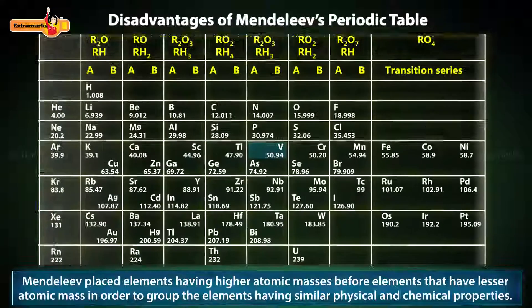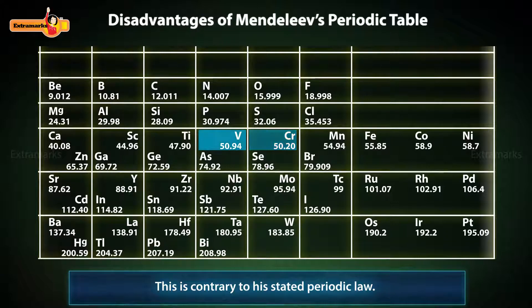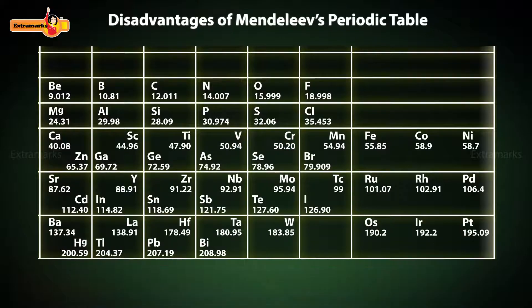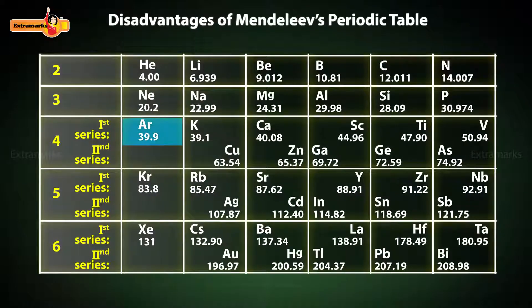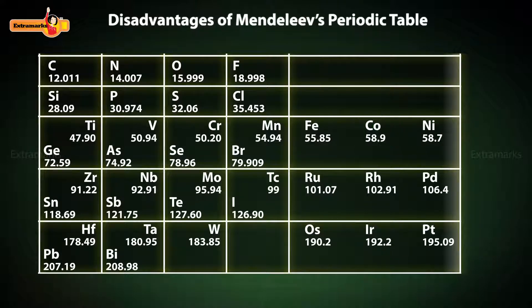Mendeleev placed elements having higher atomic masses before elements that have lesser atomic mass in order to group elements having similar physical and chemical properties. This is contrary to his stated periodic law. For example, he placed argon having atomic mass 39.9 before potassium having atomic mass 39.1. Cobalt having atomic mass 58.9 was placed before nickel having atomic mass 58.7.